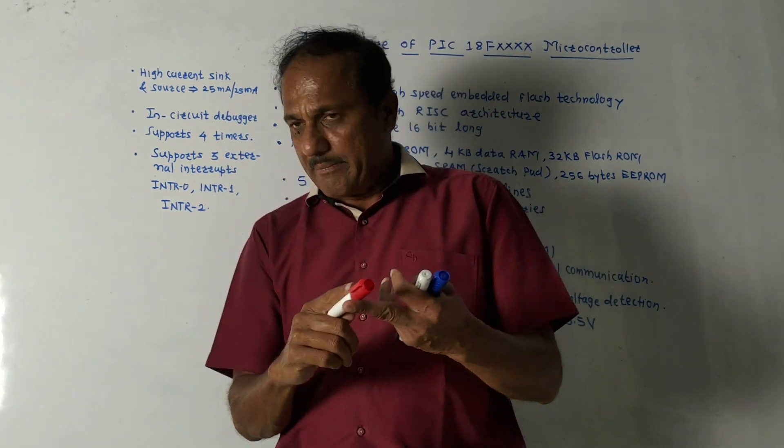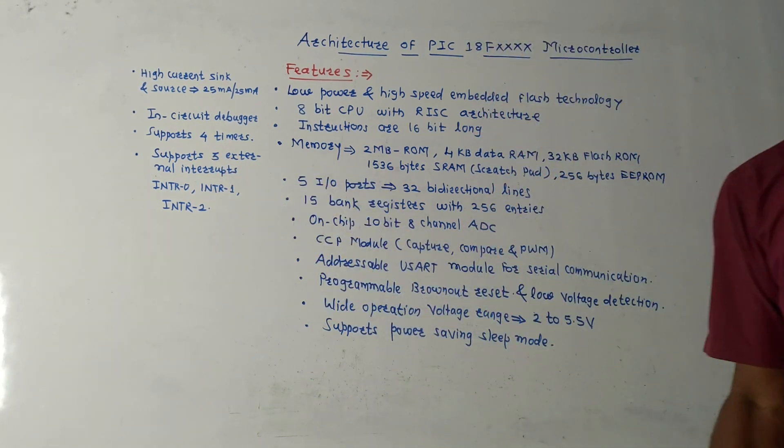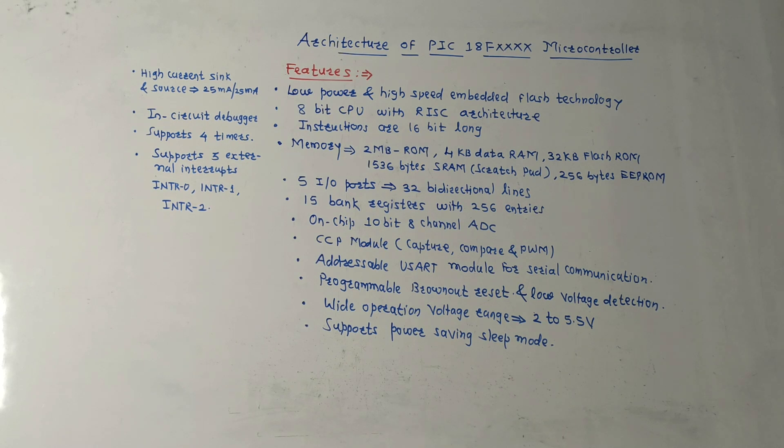Its operating voltage is having wide range from 2 volts to 5.5 volts. It supports power saving sleep mode. It has high current sink and source, 25 mA and 25 mA. It has in-circuit debugger. It supports 4 timers: timer 0, timer 1, timer 2 and timer 3. And it supports 3 external interrupts: INTR 0, 1 and 2.